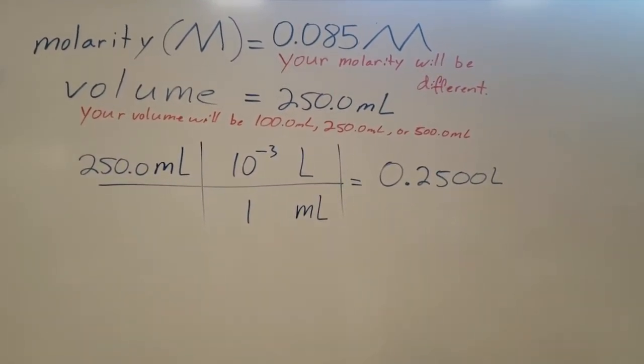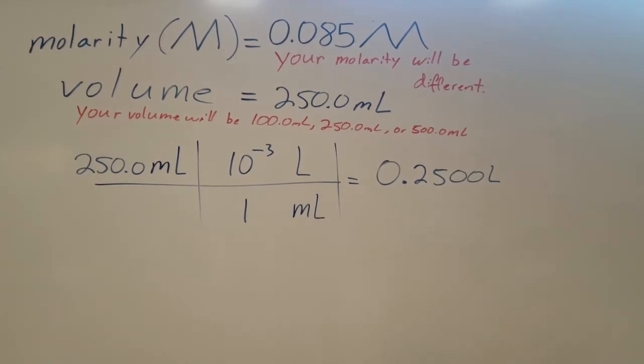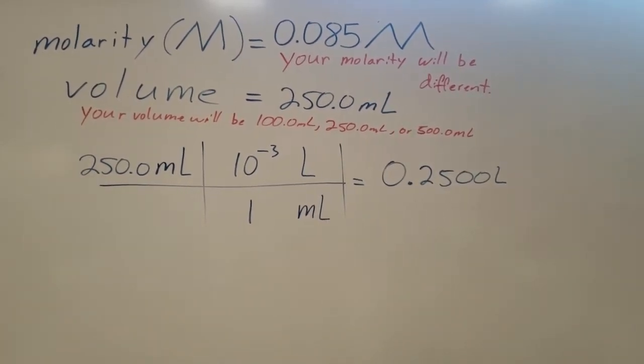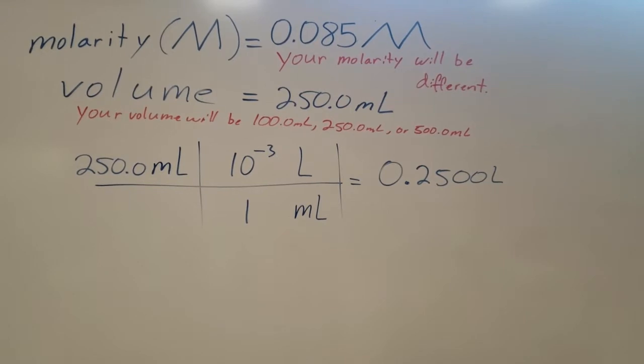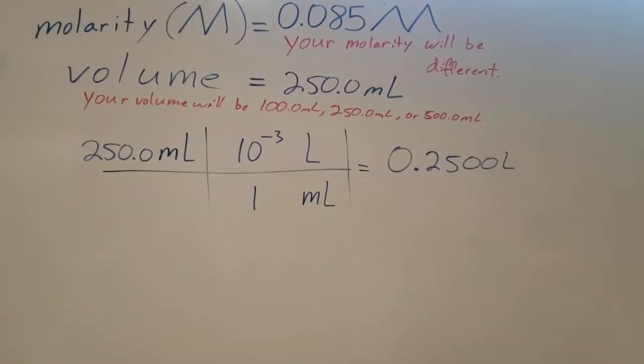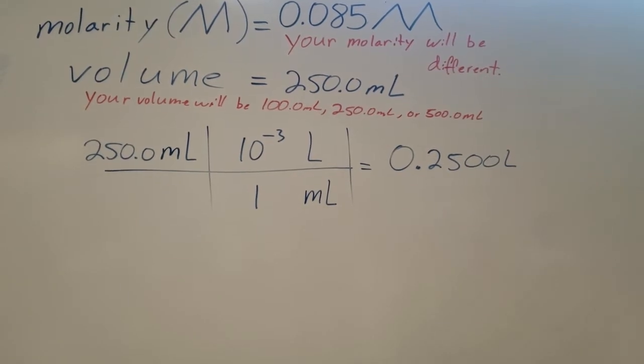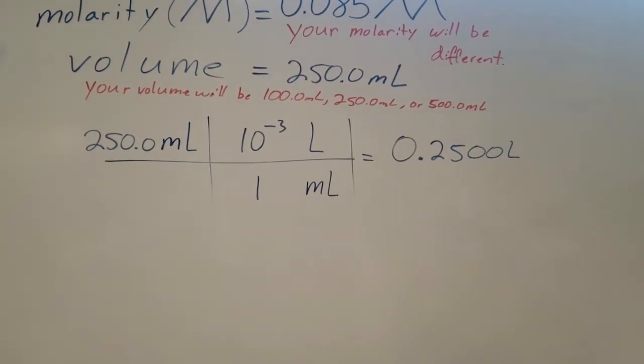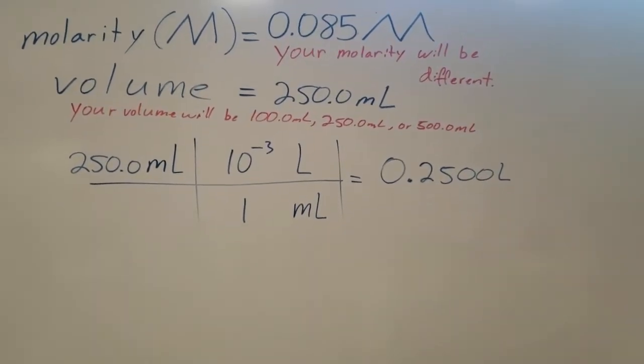The math is on the board on how to calculate to make a solution. Here it says the molarity that we are shooting for is 0.085, and it says that yours may be different. The volume is 250 milliliters, and we're going to use a 250 milliliter volumetric flask. Again, yours will be different.